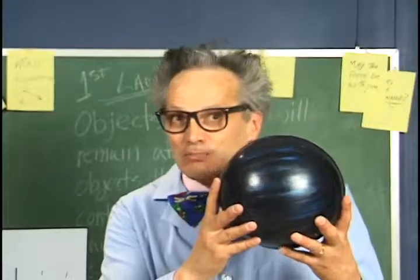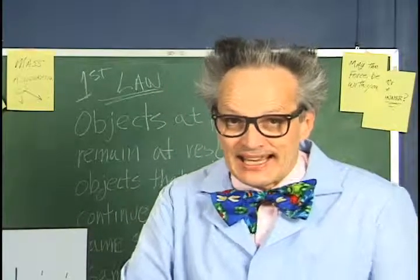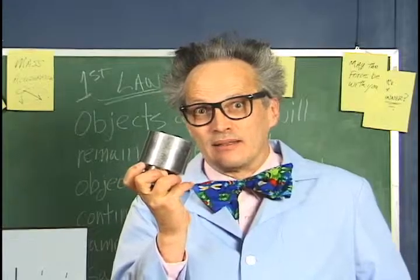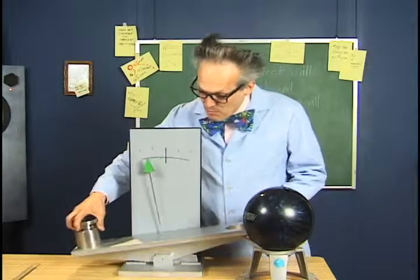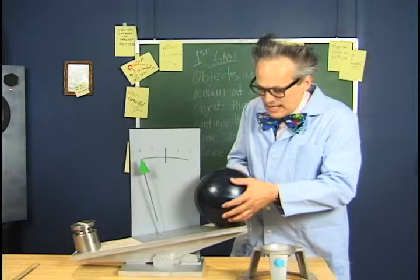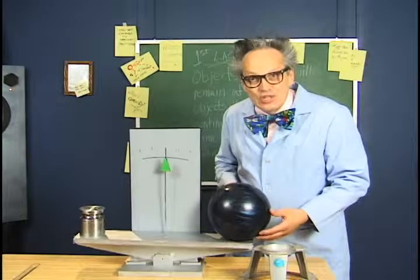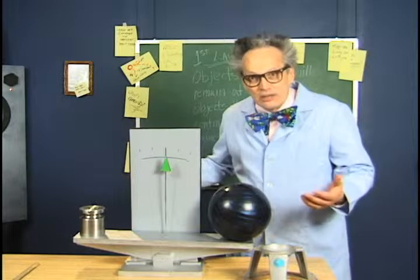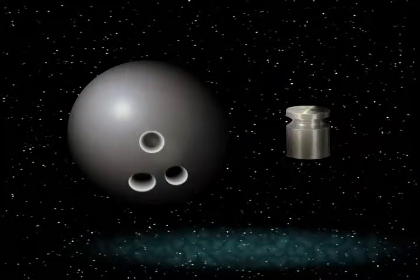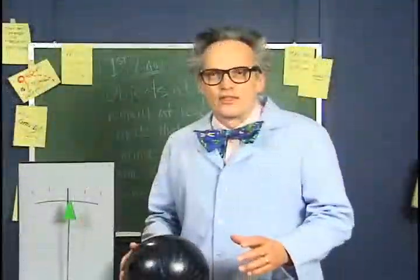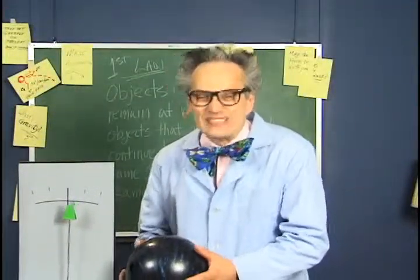Let's compare two things that are different sizes. This is a bowling ball, and this is a ten-pound weight. This scale balances equally between the two things, so we know that they have the same weight — the same amount of material. Even though they are two different sizes, these things have the same mass.